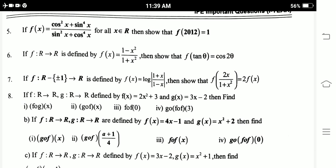Sixth: f: R → R is defined by f(x) = (1 - x²)/(1 + x²), then show that f(tan θ) = cos 2θ.